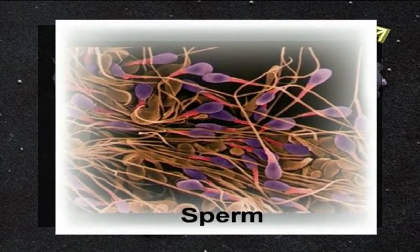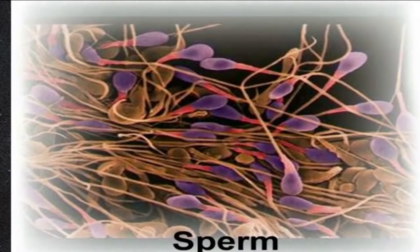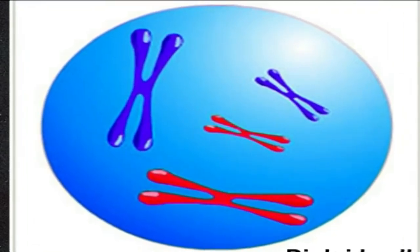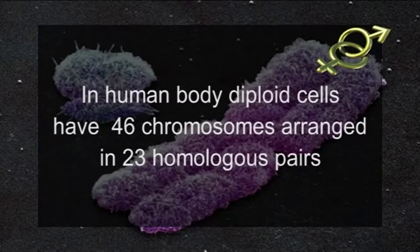Sex chromosomes are the chromosomes within a cell that determine the sex of an organism. In all organism cells, with the exception of the sperm and eggs and the gametophyte generation in plants, chromosomes are arranged in pairs called homologous pairs. Each chromosome in the homologous pair comes from a different parent. A cell that has both chromosomes of each homologous pair is a diploid cell.